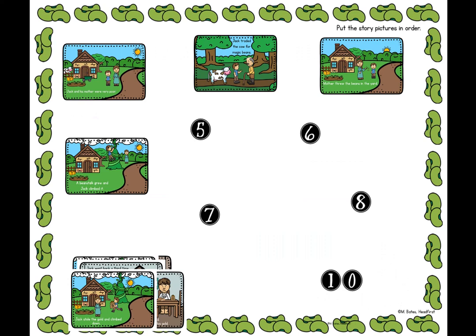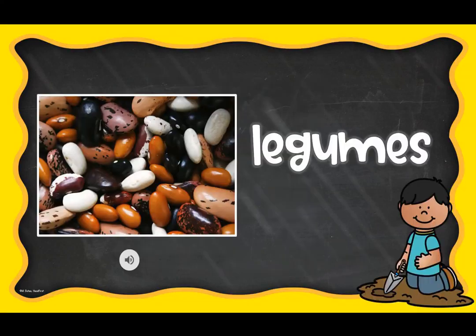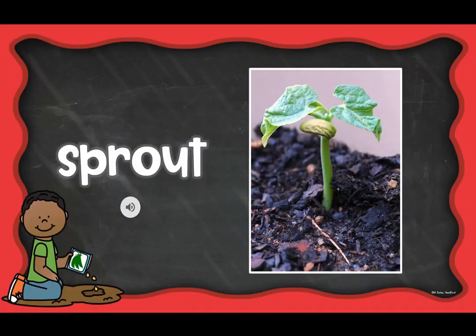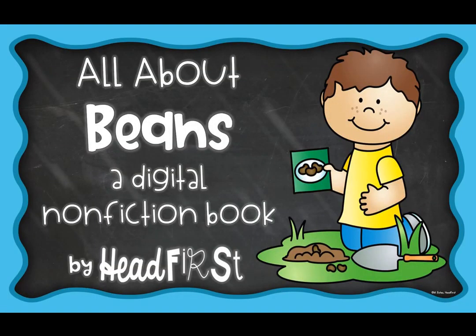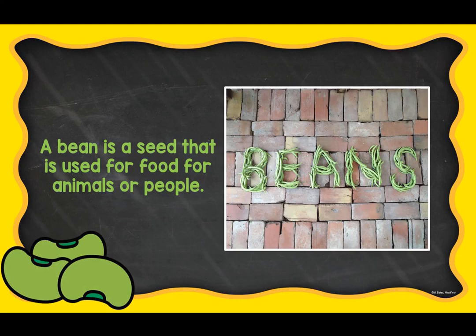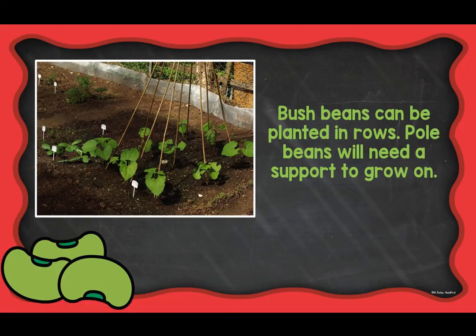And same thing here they're going to put the pictures in order. And then there is a science part of it, a nonfiction all about beans. So it has some vocabulary cards that go with it and they have some information that they can click on to listen to the different words and what they mean. I just put a couple of examples in there. And then there's a nonfiction book and I just put a couple of example pages in there so you could see what those look like.